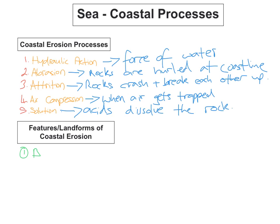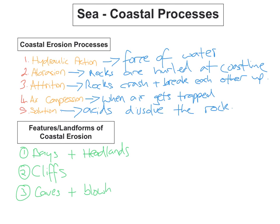The features or landforms you can talk about in your answer for coastal erosion include: bays and headlands, cliffs, caves and blowholes, and arches, sea stacks and sea stumps.